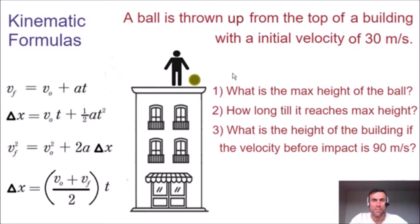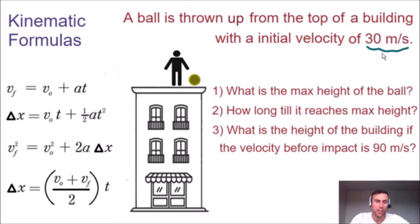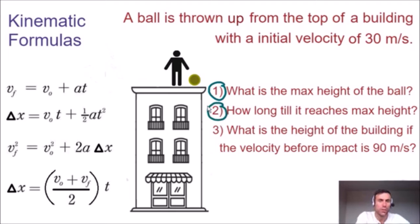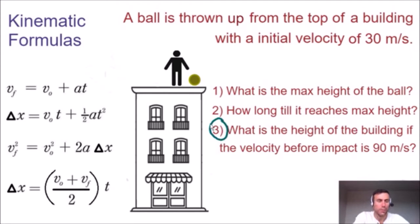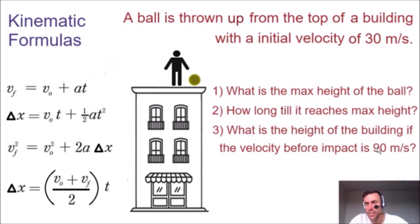Welcome to another one of my kinematics videos. In this example, we have a ball that is thrown up from the top of a building with an initial velocity of 30 meters per second. In my last two videos, we answered question number one and question number two. In this video, we're going to answer question number three: what is the height of the building if the velocity before impact is 90 meters per second?